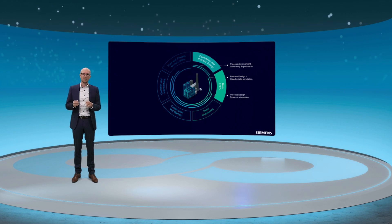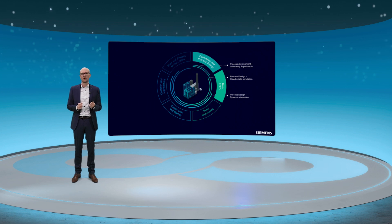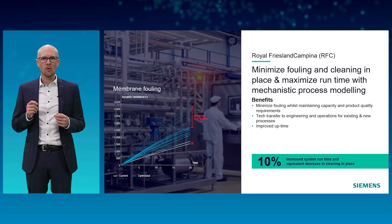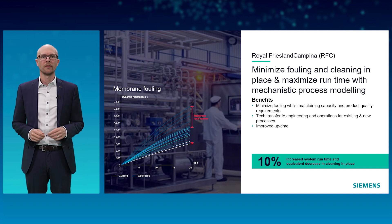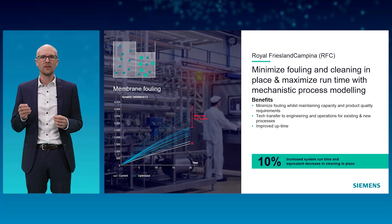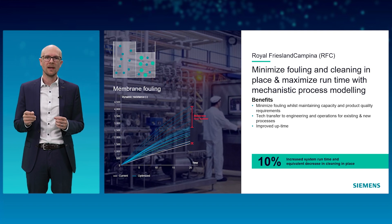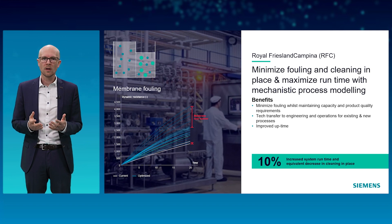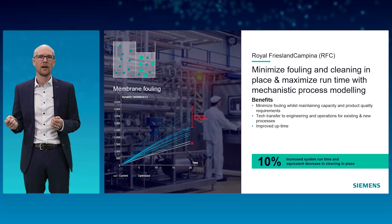Very detailed models representing the real physics and chemical behavior are created to design the process and corresponding equipment. For example, such a mechanistic model created via gPROMS helped Royal Friesland Campina to increase plant performance while reducing cleaning processes by 10%, with consistent product quality. Friesland Campina applied a membrane process model based on deep physical and chemical understanding to a wide protein concentrate application to minimize fouling whilst maintaining capacity and product quality requirements. By modeling, Friesland Campina conserves resources, because less fouling means energy-optimal processes and less cleaning means saving labor, time and cleaning agents.